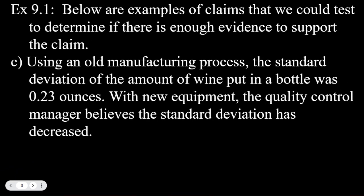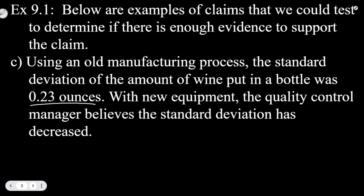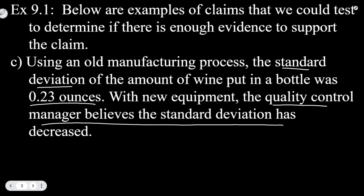Option C: Using an old manufacturing process, the standard deviation of the amount of wine put in a bottle was 0.23 ounces. With new equipment, the quality control manager believes that the standard deviation has decreased — in other words, it's more consistent. We have the original information about the standard deviation, and then the manager's belief that something has changed. We're always going to have an original piece of information and an additional piece of information that we're testing.